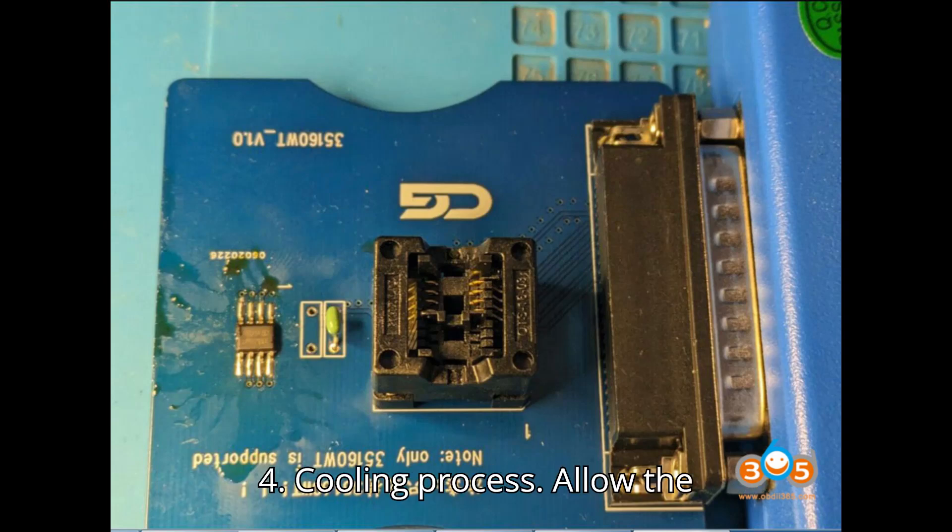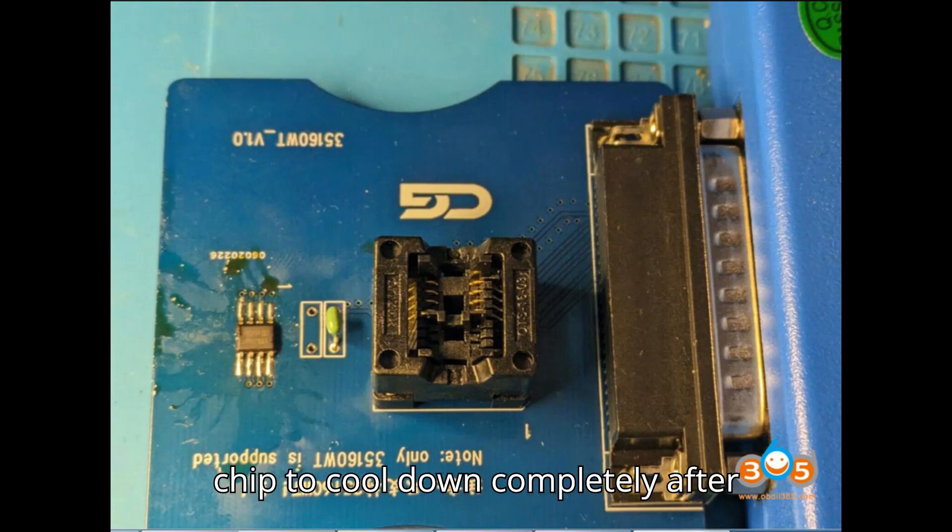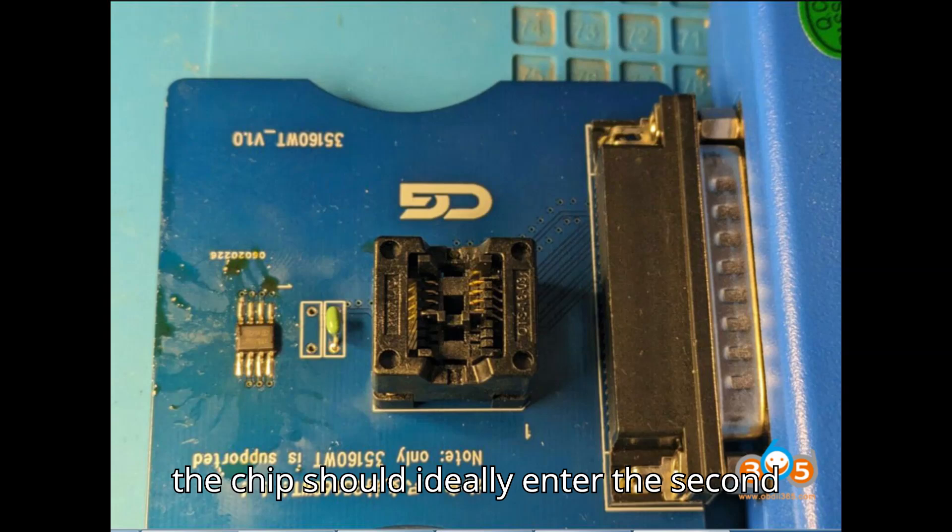Step 4: Cooling Process. Allow the chip to cool down completely after installation. During the cooling process, the chip should ideally enter the second stage of erasing on its own.